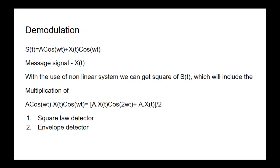To extract x(t) we use a non-linear system, because the non-linear system gives the square of s(t). In the square of s(t) we get the multiplication of A·cos(ωt) multiplied by x(t)·cos(ωt). On simplifying this we get A·x(t)·cos(2ωt) plus A·x(t) divided by 2. The first term A·x(t)·cos(2ωt) is a high-frequency term, and the second term A·x(t) is our message signal with some amplitude multiplication.